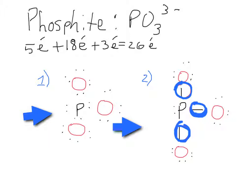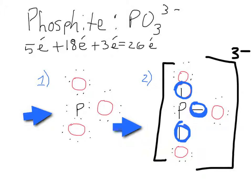And now we go ahead and draw the line for the bracket. We need it, and we don't forget that it's 3- charge, and this is the exact correct form of how it should look.